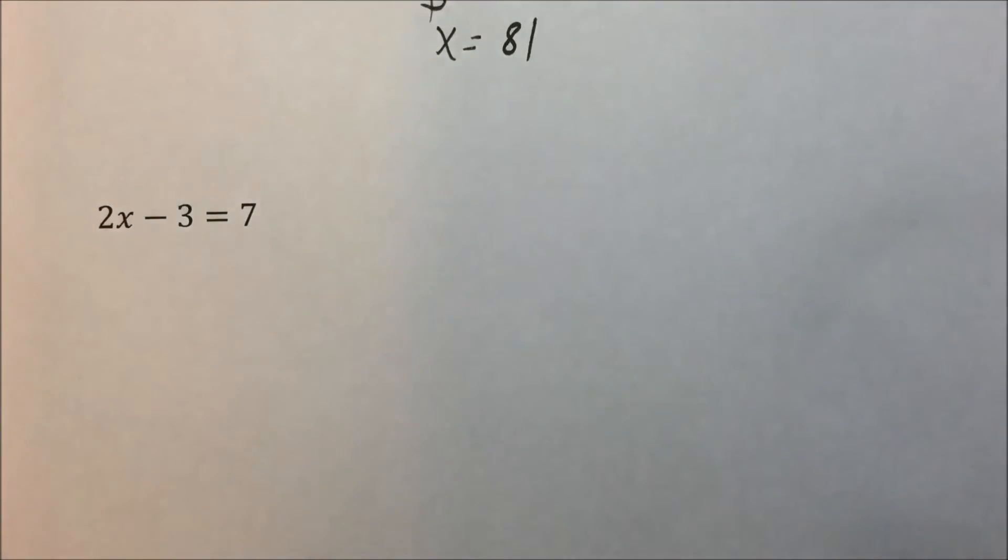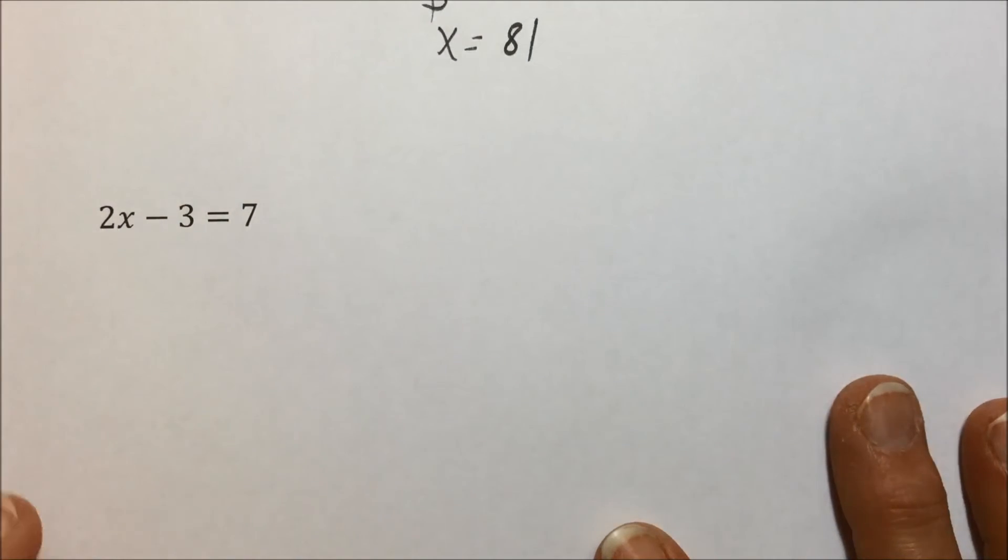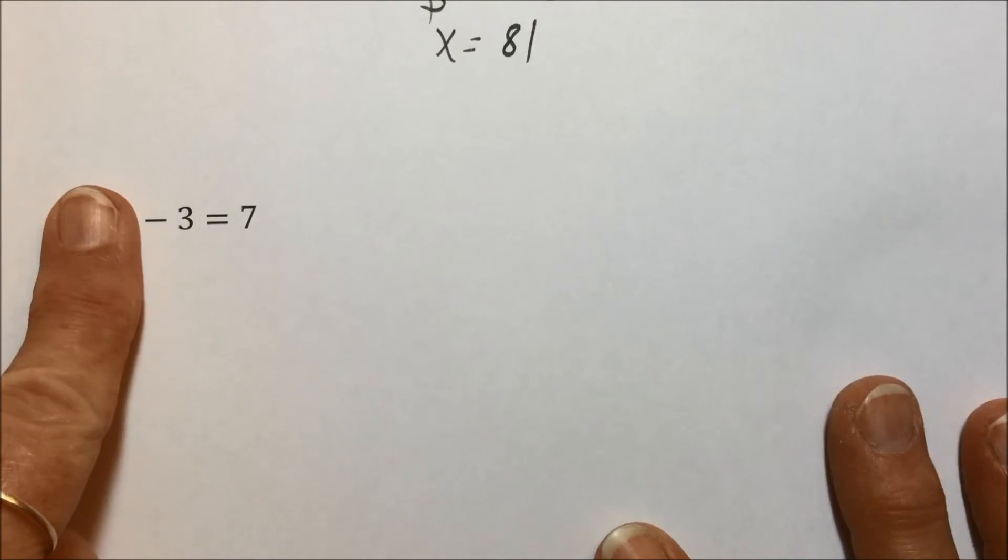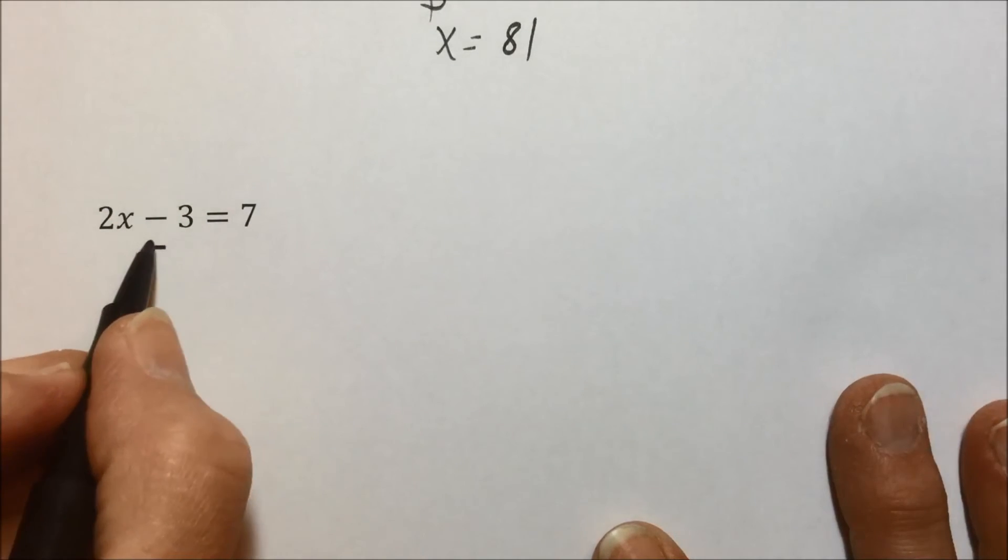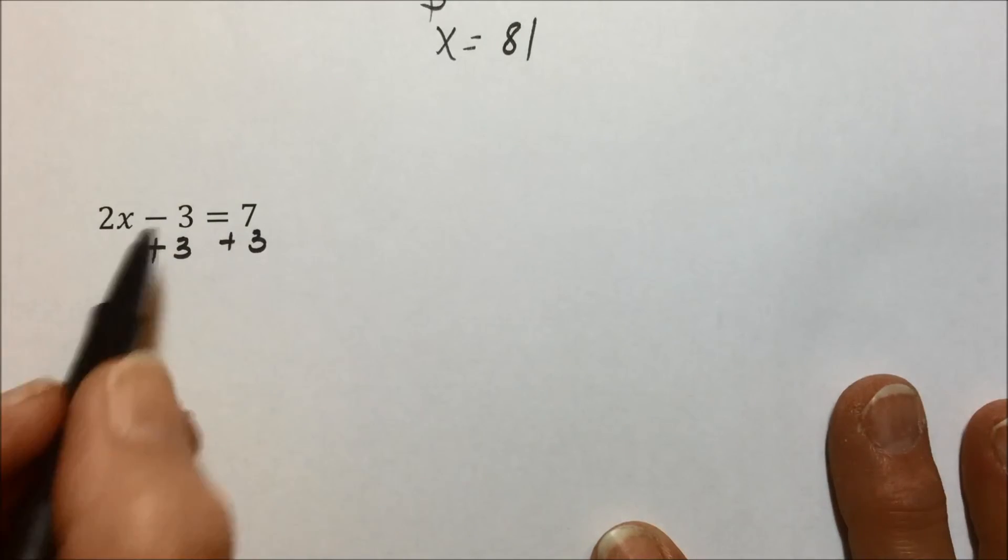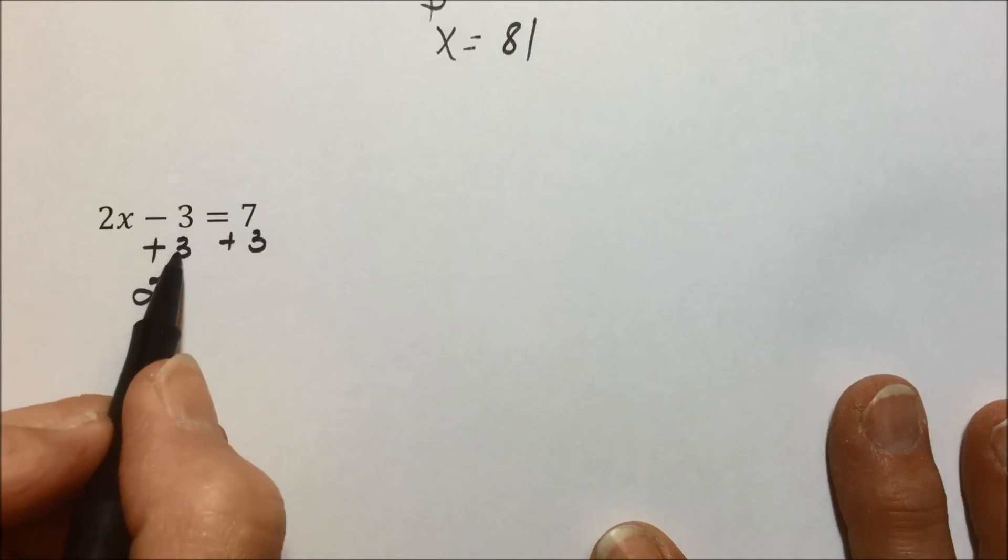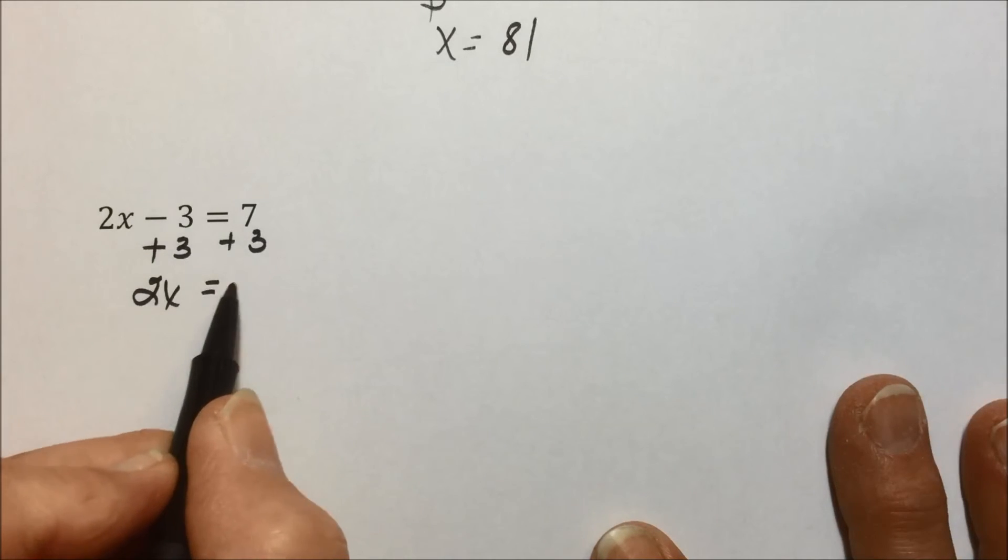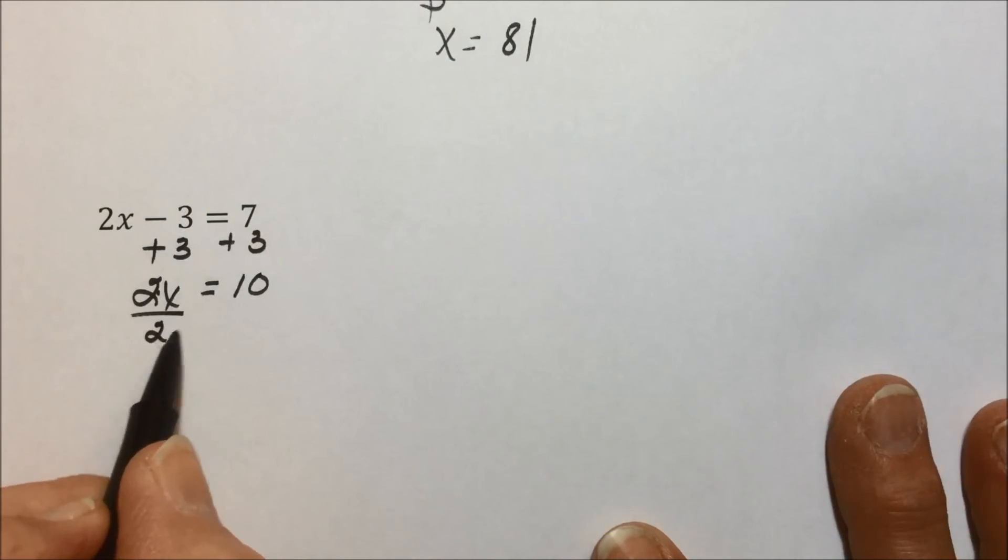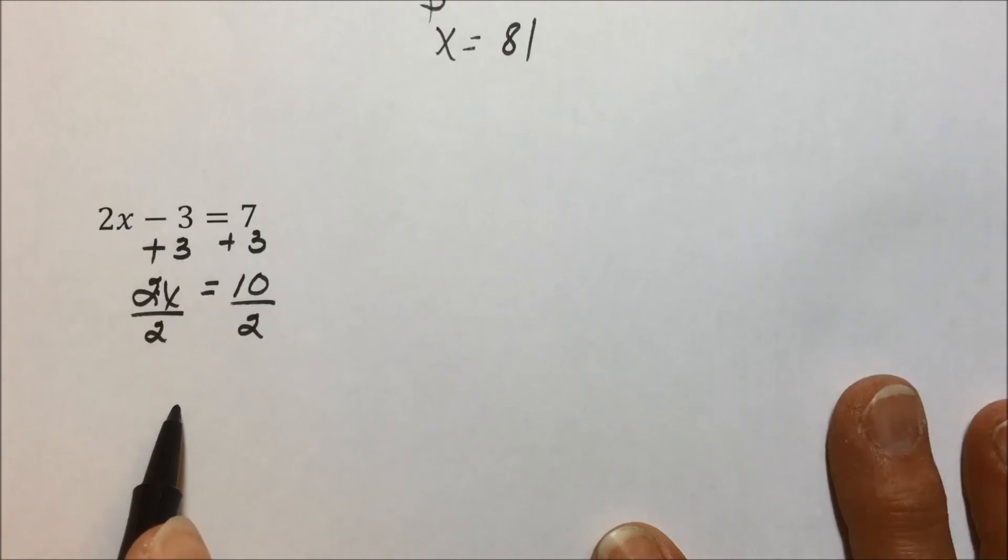In this last example, we need to work our way essentially back through the order of operations to get to the variable, and the first thing before we worry about the 2 on the x is to eliminate that minus 3. We'll use the addition principle by adding 3 to both sides. The minus 3 plus 3 cancel out, leaving 2x. 7 plus 3 is 10.